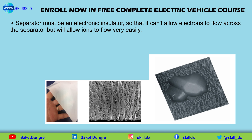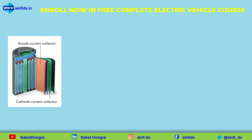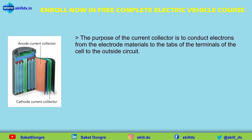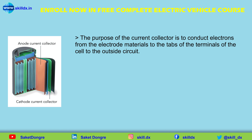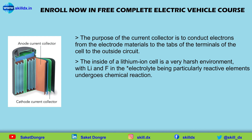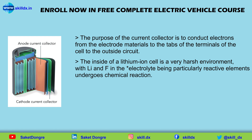Ions can still flow through the pore openings. Lithium-ion battery cells also have current collectors — metal foils onto which the electrode materials are deposited. The purpose of the current collector is to conduct electrons from the electrode materials to the tab or terminals of the cell to the outside circuit. These foils are subjected to very harsh environments inside the cell, as lithium ions and fluorine-based ions in the electrolyte tend to be very reactive chemically.